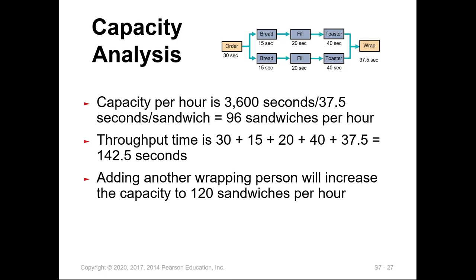The throughput time is 30 plus 15 plus 20 plus 40 plus 37.5 seconds, totaling 142.5 seconds for one unit to be completed. Adding another wrapping person would increase capacity to 120 sandwiches per hour.